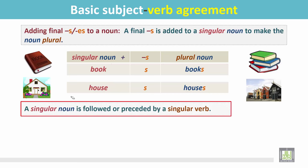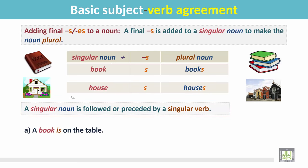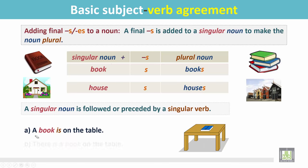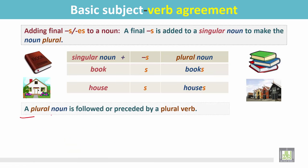A singular noun is followed or preceded by a singular verb. For example: 'A book is on the table' or 'The book is on the table.' Here 'book' is a singular noun followed by 'is,' a singular verb. We can also say: 'There is a book on the table,' where 'book' is preceded by the singular verb 'is.'